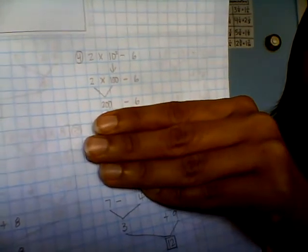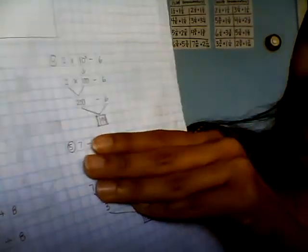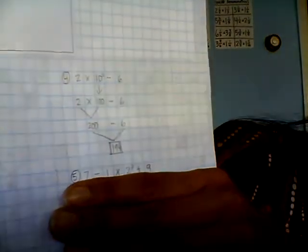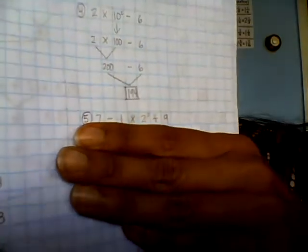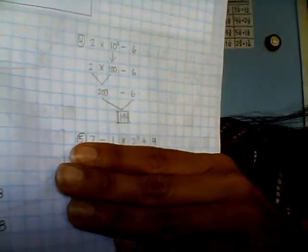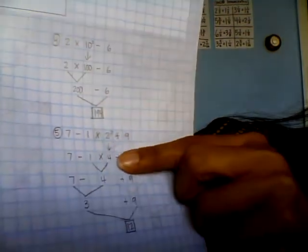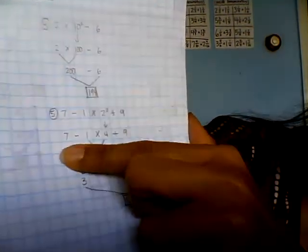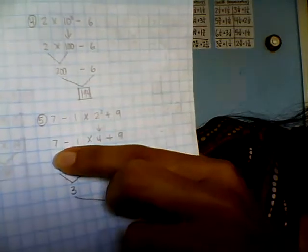Moving on to the last one, number five. We have 7 - 1 × 2² + 9. What do we do first? We do the exponents first, which is 2², which is 4. Remember, I'm bringing everything down.